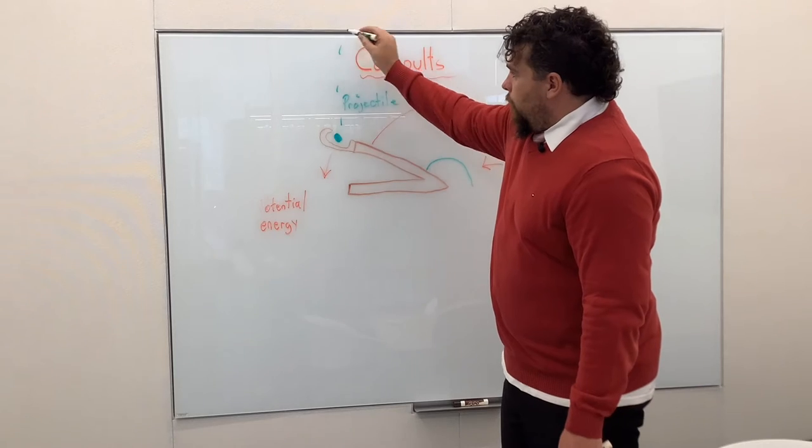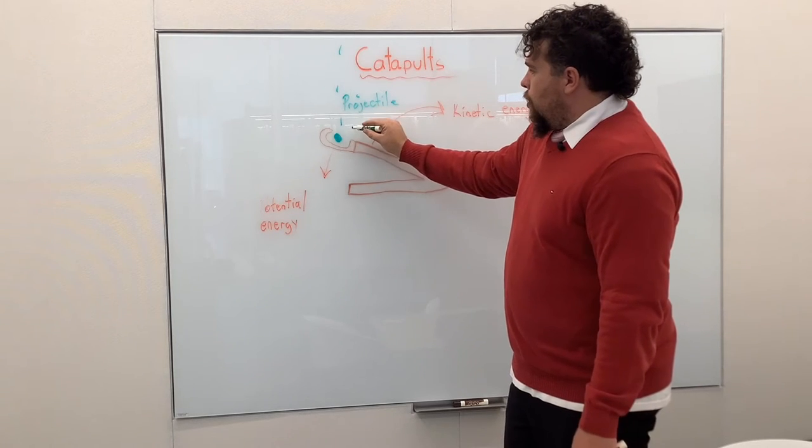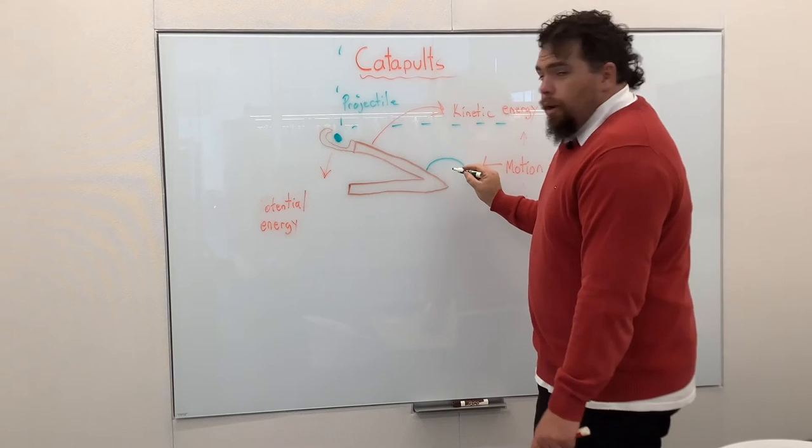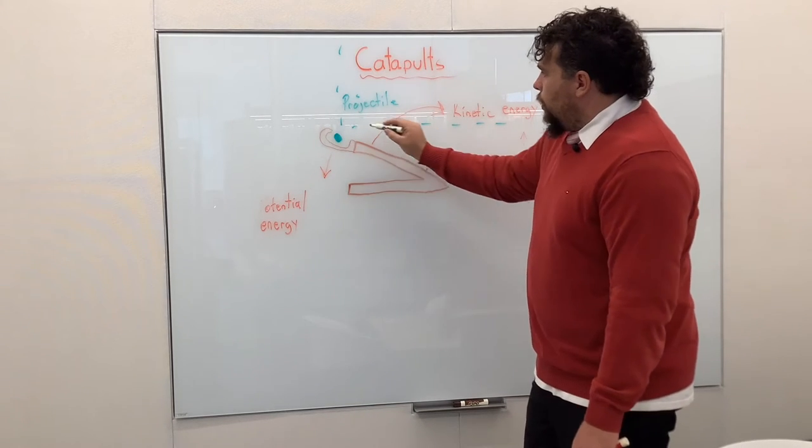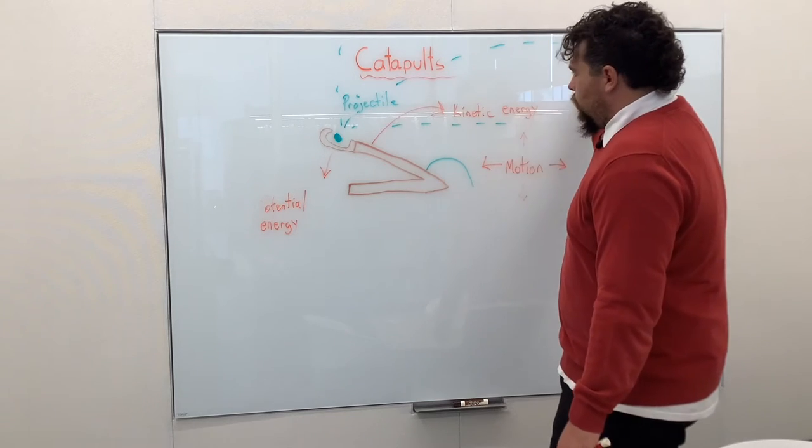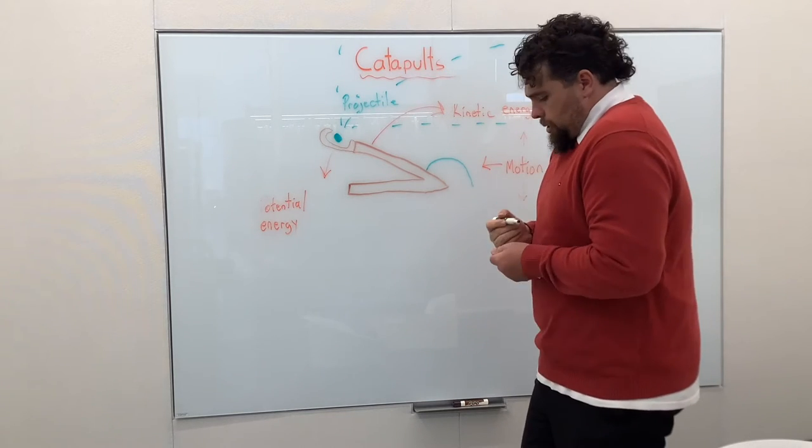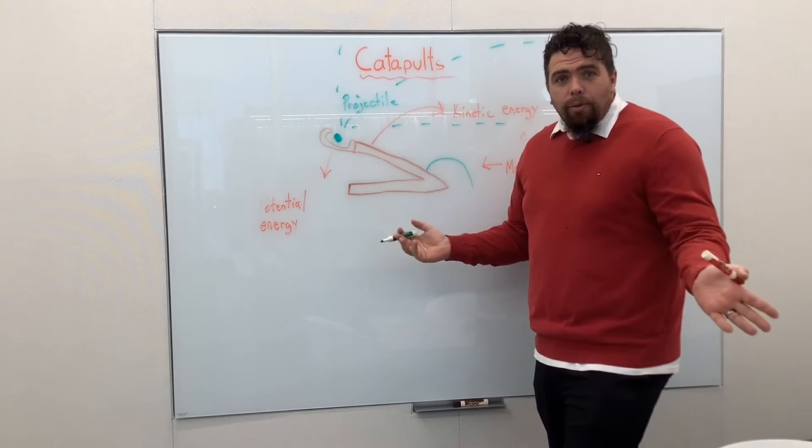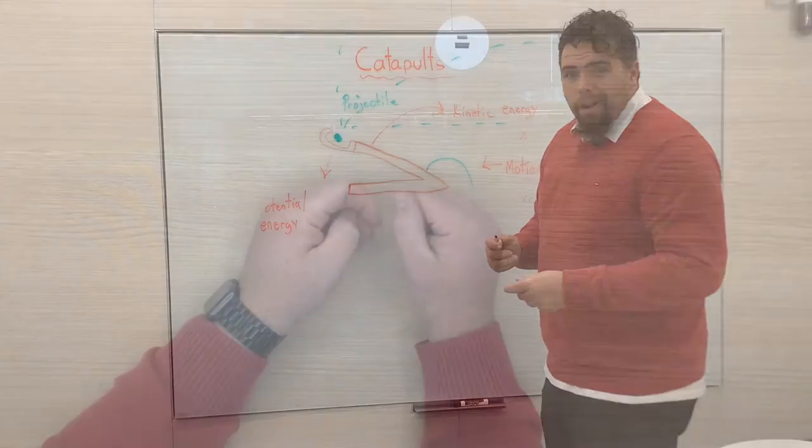And that's all going to depend on this right here, which is going to be our launch angle. So our launch angle will tell us where our projectile is going to fly. It could either fly straight up or straight across, and if we have the right angle right here, we can make it go up and across. So that is our catapult.